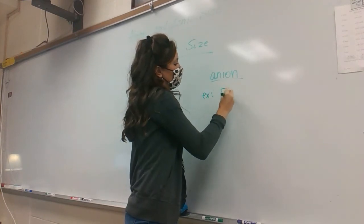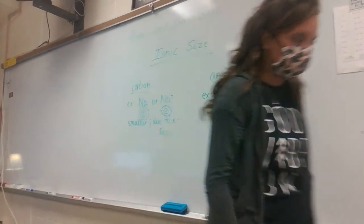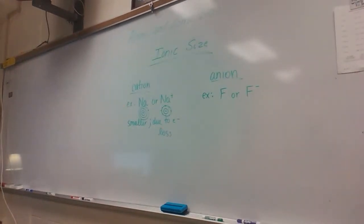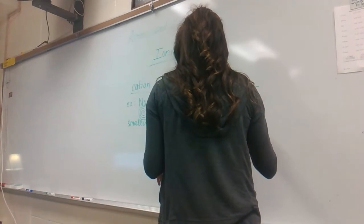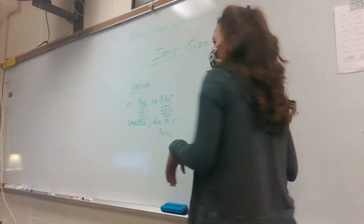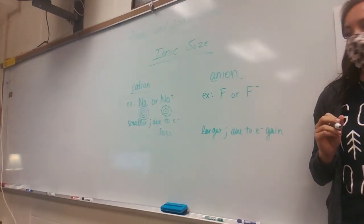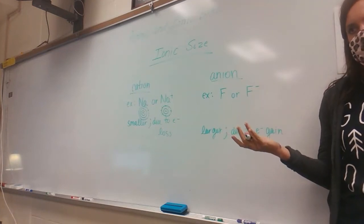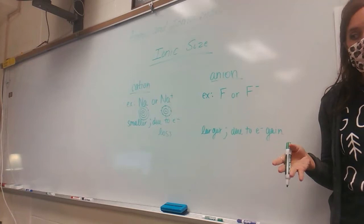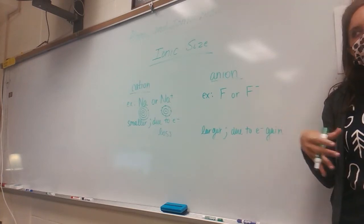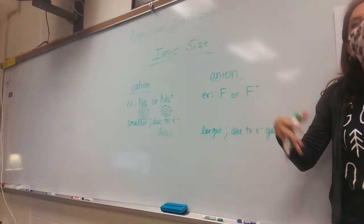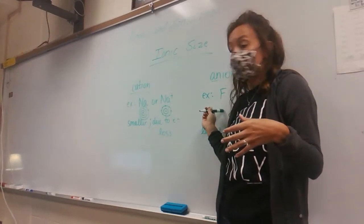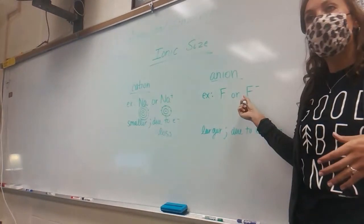Anions have gained one or more electrons, so they're larger than their parent atoms. The trick is they don't gain energy levels — they gain electrons in their existing valence energy level. Gaining those electrons creates more electron repulsion, and more electron repulsion makes the atom a little bigger. This isn't as significant a change as with cations, but anions are still bigger than their parent atoms.